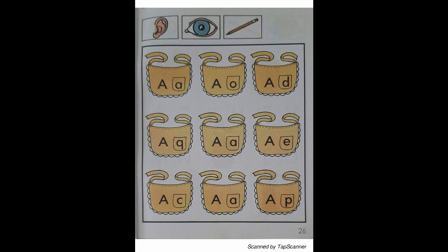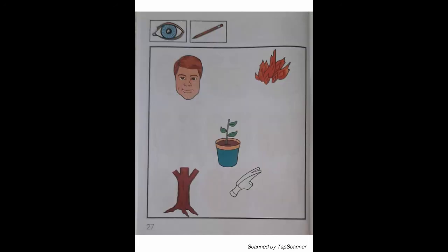Listen carefully. We want to choose only the appearances that have a big A and a little A on them. With your eyes, find the appearances that have a big A and a little A on them. With your pencil, draw a line under each appearance that has a big A and a little A on it.